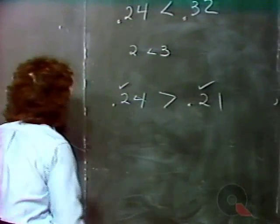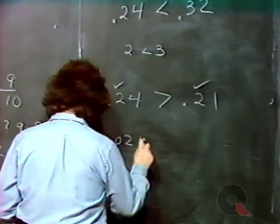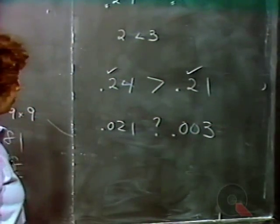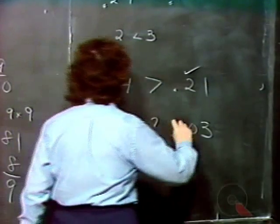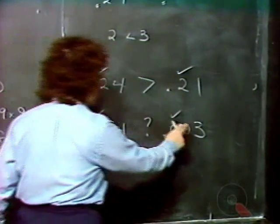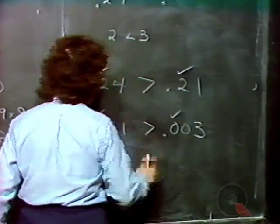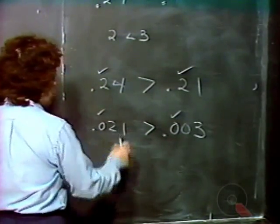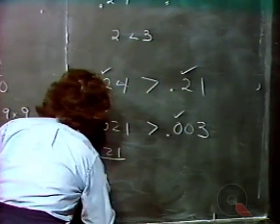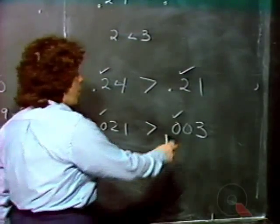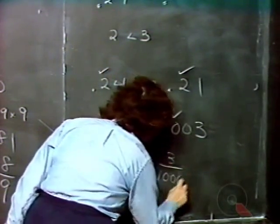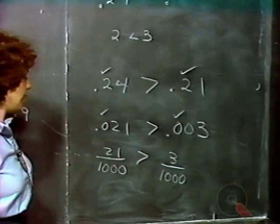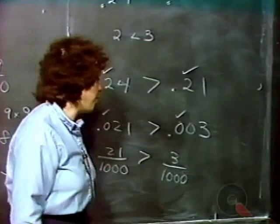Let's try another one: .021 compared to .003. The zeros in the first position are the same, but since 2 is greater than 0, .021 must be greater than .003. Note that .021 is 21 thousandths — written as 21 over 1,000 — and .003 is 3 thousandths, or 3 over 1,000. Since these are fractions with the same denominator, the larger numerator — 21 — determines the larger fraction.